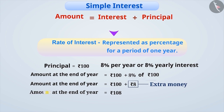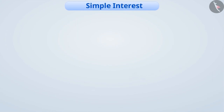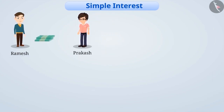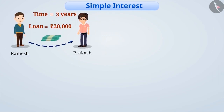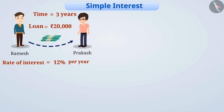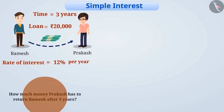Now, let's understand it in a better way with an example. Prakash borrows Rs.20,000 from Ramesh for 3 years. While taking the loan, they agree on the condition that Prakash will pay 12% interest per year to Ramesh for using his money. Let us find how much money Prakash has to return to Ramesh after 3 years. Here, the rate of interest is 12% per year.